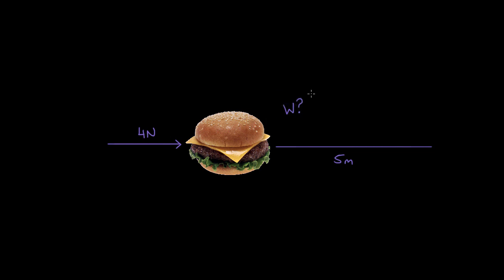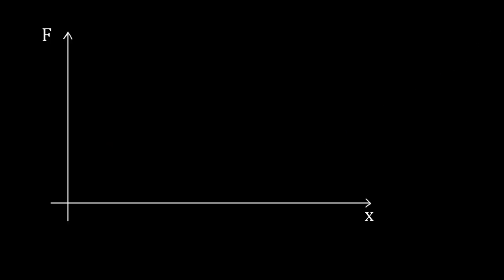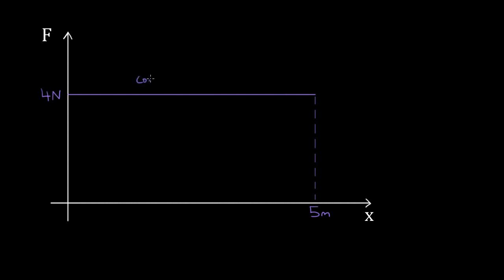Instead of just plugging straight in, consider the fact that we exerted a force of four Newtons for the entire five meters that we pushed this hamburger to the right. So if we were to plot what the force was on our hamburger as a function of its position, it would look something like this. If it started at zero and moved five meters to the right, and we exerted a constant force of four Newtons — that's why this is a horizontal line. It's horizontal, meaning it was a constant amount of force.